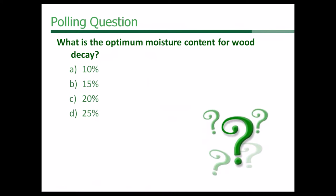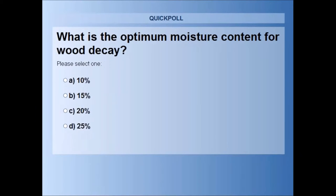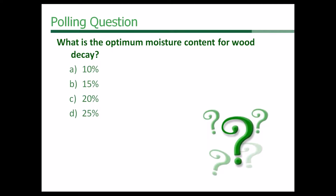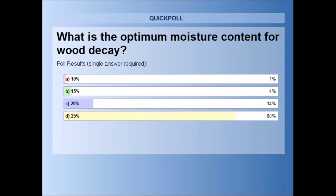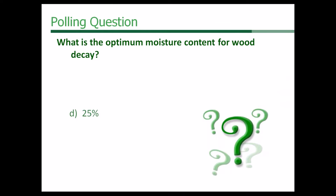I'm going to ask Marcy to come back, and we're going to throw a couple of polls in along the way. What is the optimum moisture content for wood decay? Is that 10%, 15%, 20%, or 25%? We have 80% say 25%, 14% say 20%, 4% say 15%, and only 1% say 10%. The correct answer is 25% is the optimum level for decay. That doesn't affect your CEU in any way — just to help in the learning process.